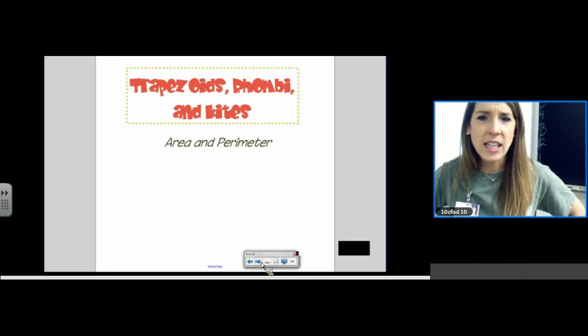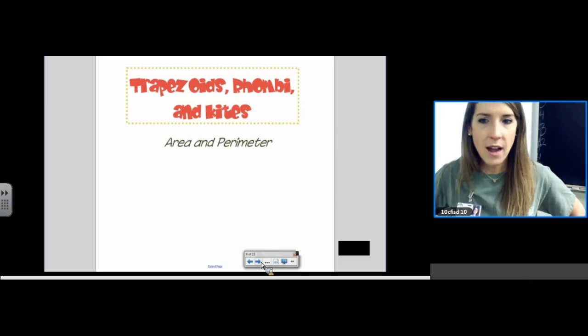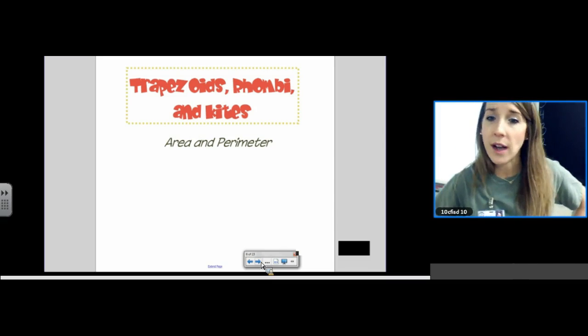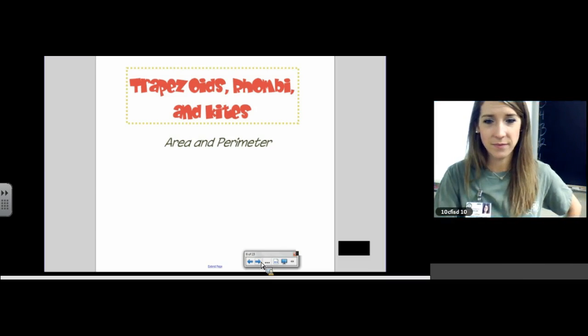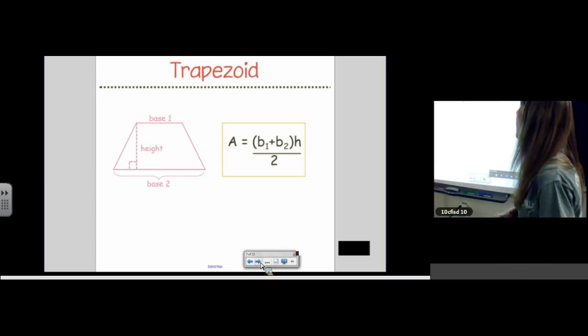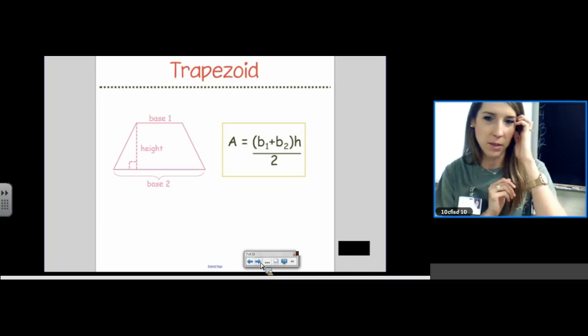That was for practice, but we're not going to. You don't need it. Title of your notes, Trapezoid Rhombi Kites. You've probably already seen the formula for trapezoid before, but you may not have known how to find the area of a rhombus or a kite. So, hopefully, I get to teach you something a little bit new today.